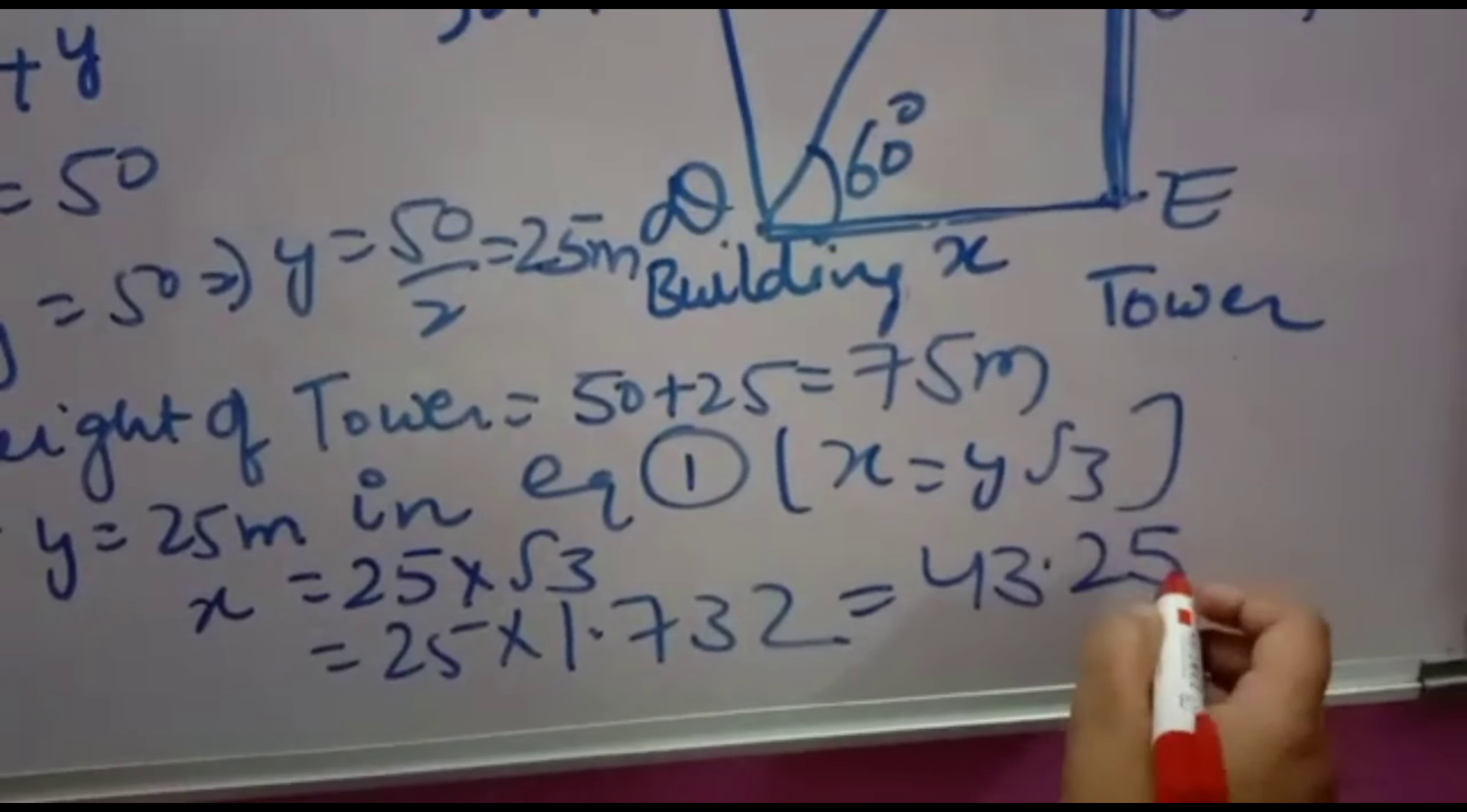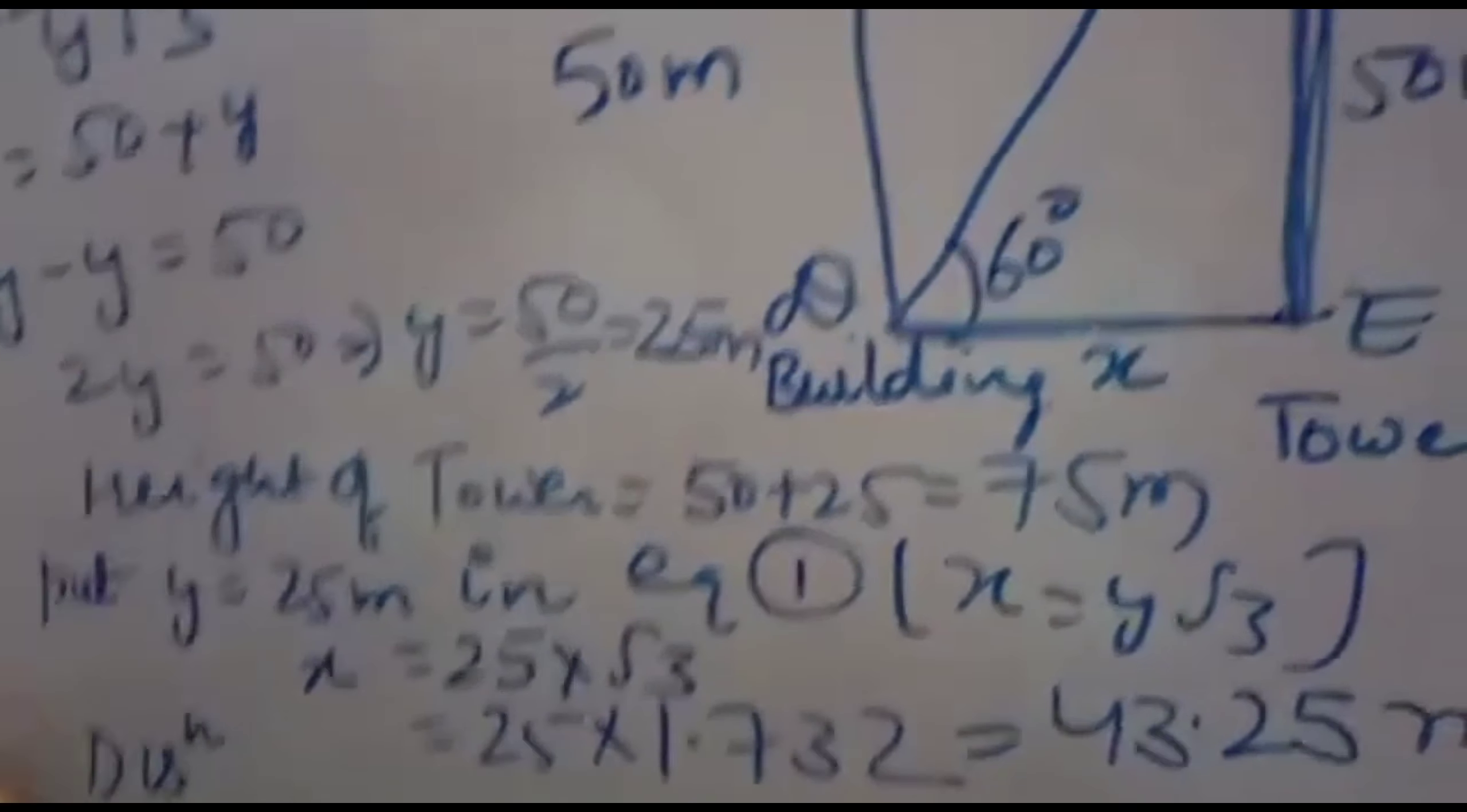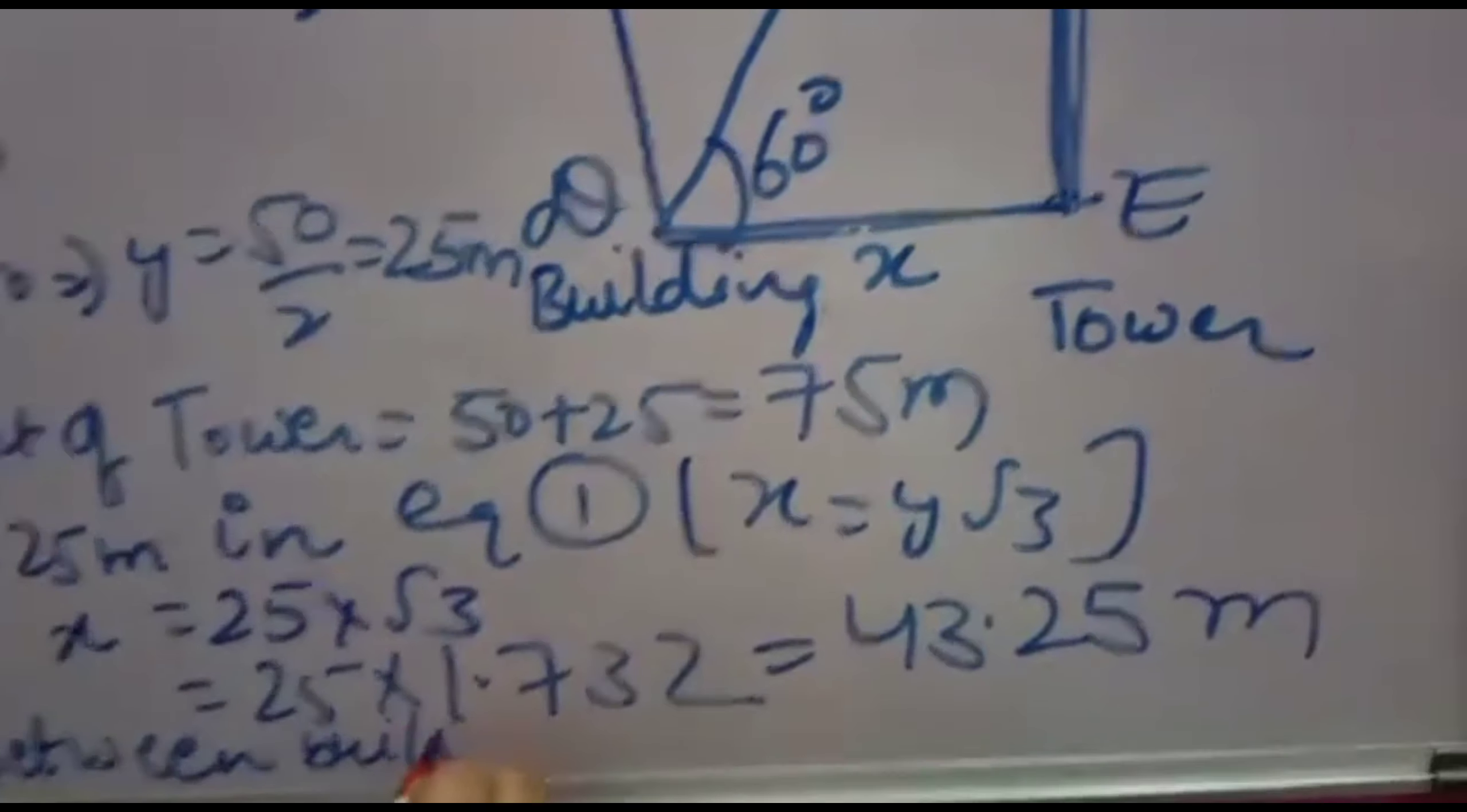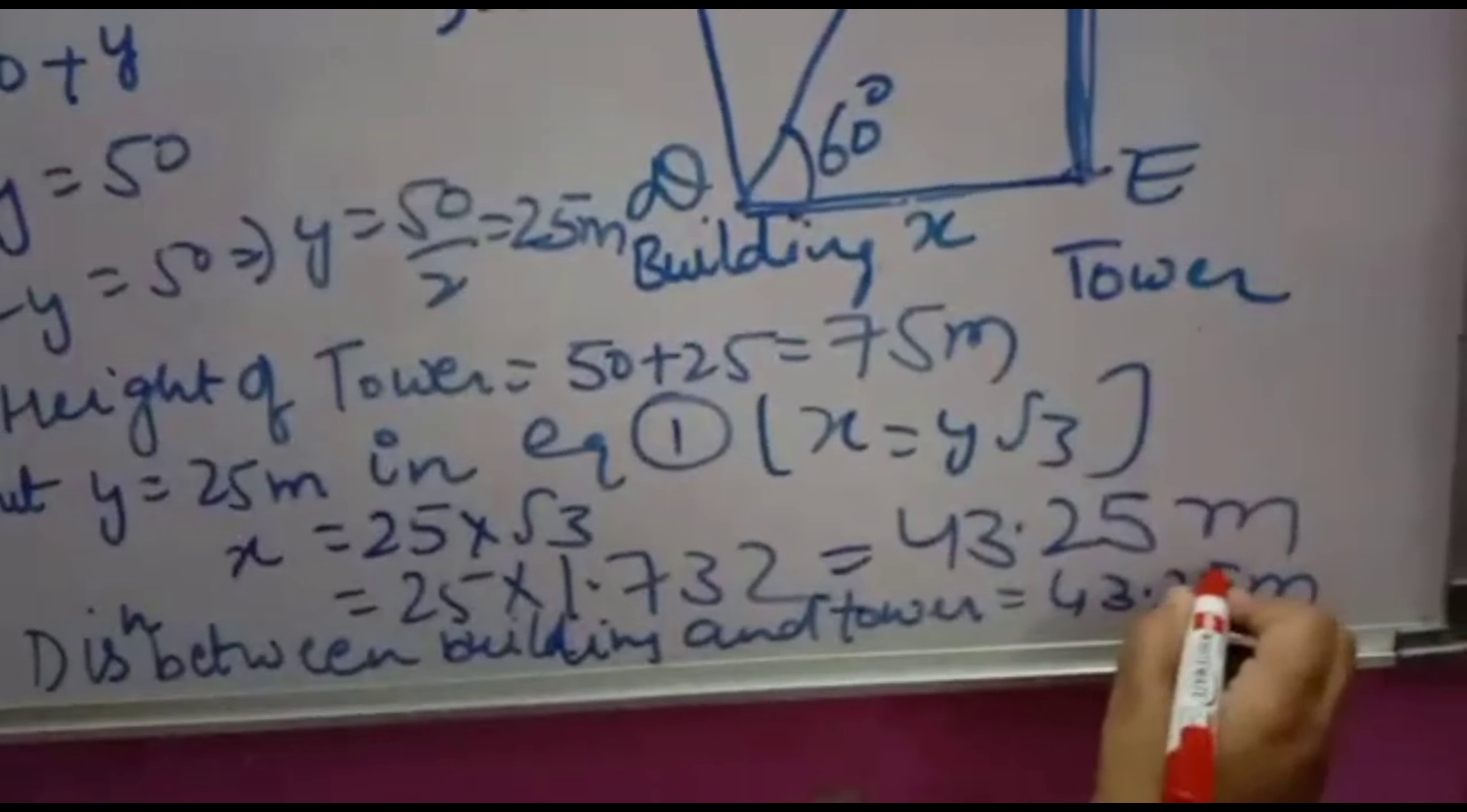43.25. And unit will come meter. So this is the distance. Horizontal distance between building and tower is equal to 43.25 meter. Thank you.